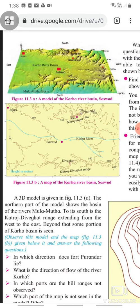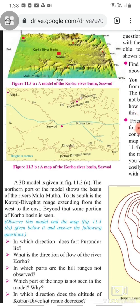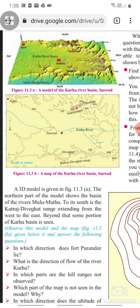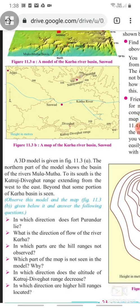A 3D model is given in figure 11.3a. The northern part of the model shows the basin of the rivers Mula Muthah. To its south is the Katraj Divighat range extended from the west to the east. Beyond that, some portion of Karha basin is seen. Observe the model and the map given below. It answers the following questions. In which direction does Fort Purandar lie?